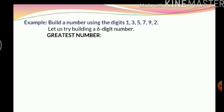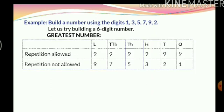Let's see an example. Build a number using the digits 1, 3, 5, 7, 9 and 2 — a 6-digit number. First, the greatest number. When repetition is allowed, we choose the greatest digit, which is 9, and repeat it in all place value boxes, giving us 9,99,999. When repetition is not allowed, we arrange the numbers in descending order, giving us 9,75,321.